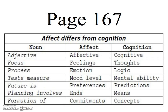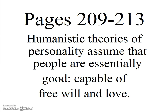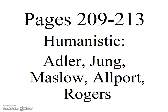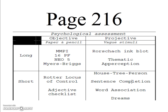In Unit 10, students want to know more about the humanistic theories of personality. These assume that people are essentially good, capable of free will and love. Humanistic theorists include Adler, Jung, Maslow, Allport, and Rogers. I also think it's important for students to remember the different personality types, such as Hippocrates' Sanguine, Choleric, Melancholic, and Phlegmatic types; Friedman's Type A; and the whole idea of Introverts and Extroverts. The different types of psychological tests are summarized on page 216.